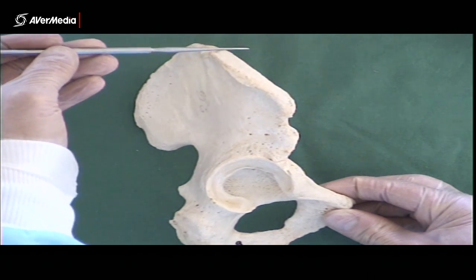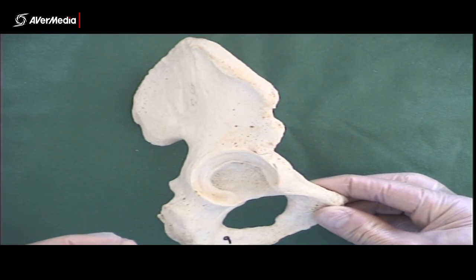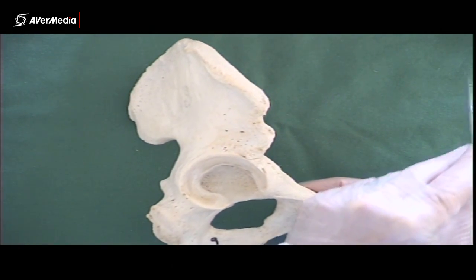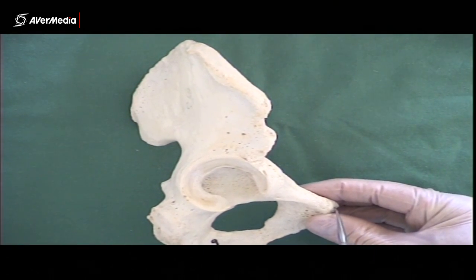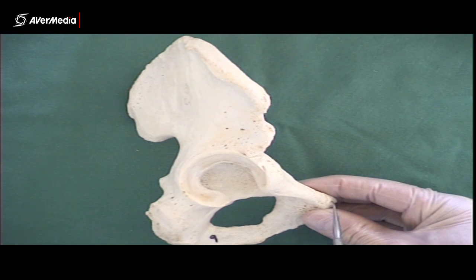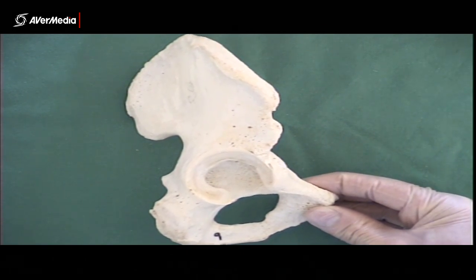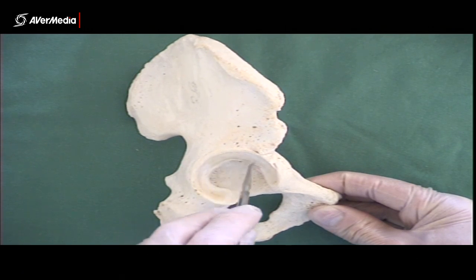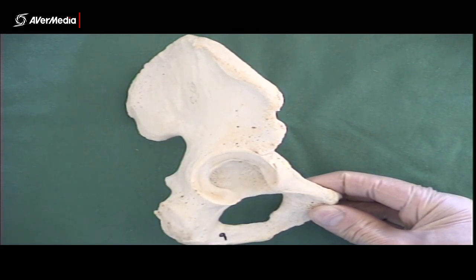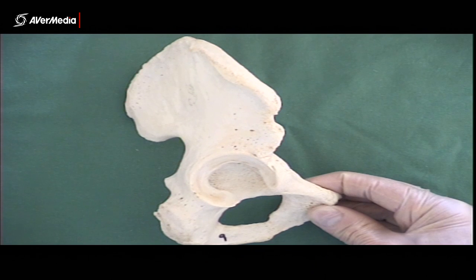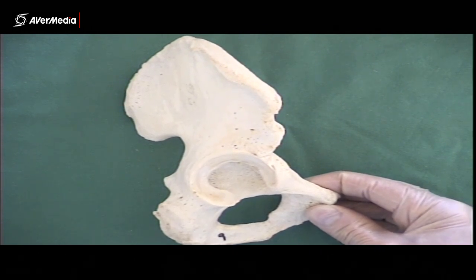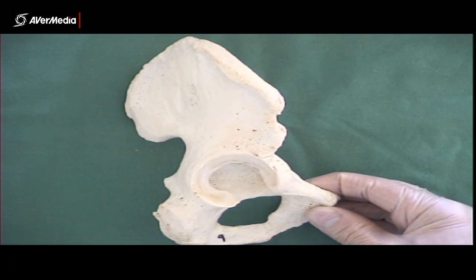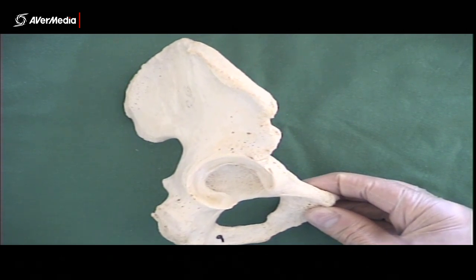This is the superior aspect of the hip up here, this is inferior, this side is posterior, and this side here is the anterior aspect. We're looking from a lateral point of view. Because we're looking from a lateral point of view, we can see this great big cavity or socket here — that's the acetabulum. That's where the head of the femur is going to fit, and it's huge.